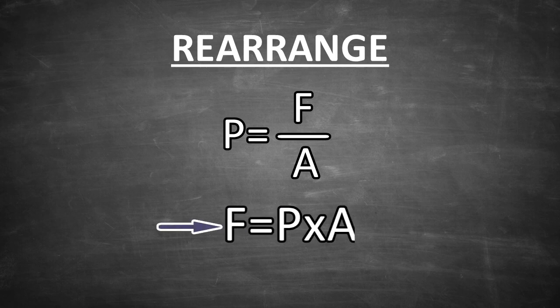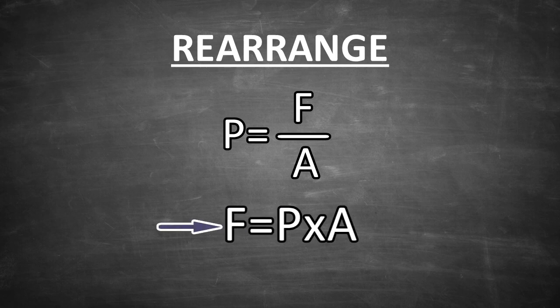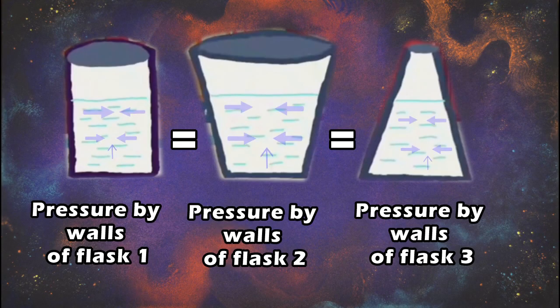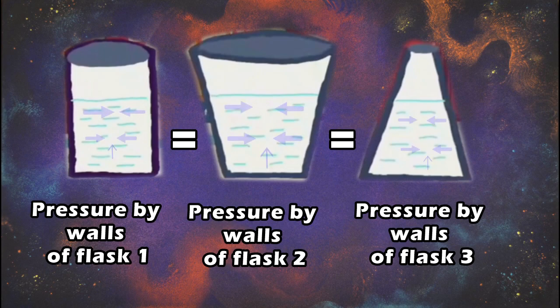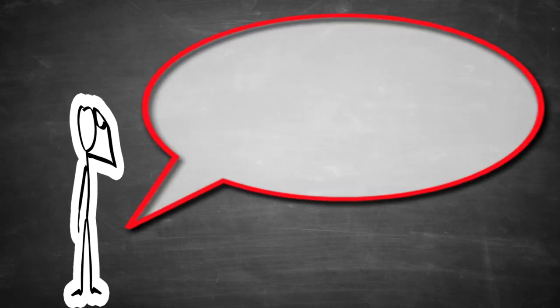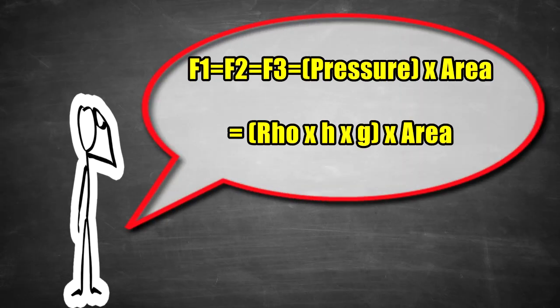On rearranging the equation for force, we get force is equal to P times A. The force exerted by the walls of flask 1 will be pressure times the area of cross-section. Recall the dimensions of the base of each flask are identical, and so the forces will be equal on all three flasks. That translates to the fact that the force exerted by walls of flask 1 equals that by walls of flask 2 equals that of flask 3. F1 equals F2 equals F3 equals pressure times area, which also equals ρhg times area.